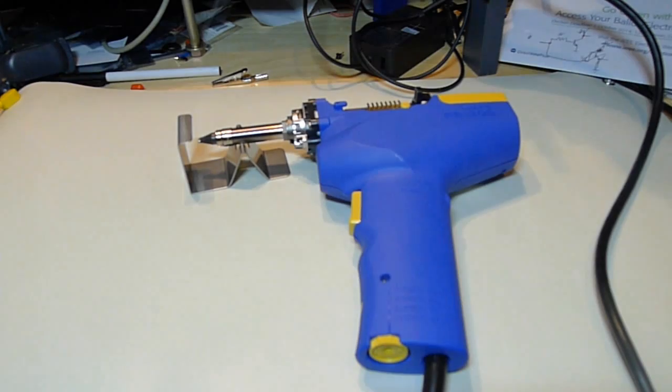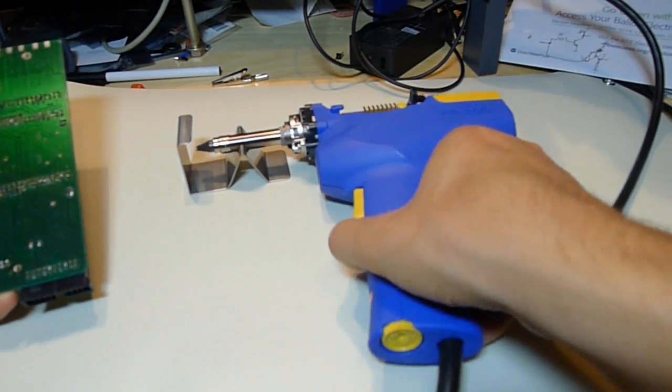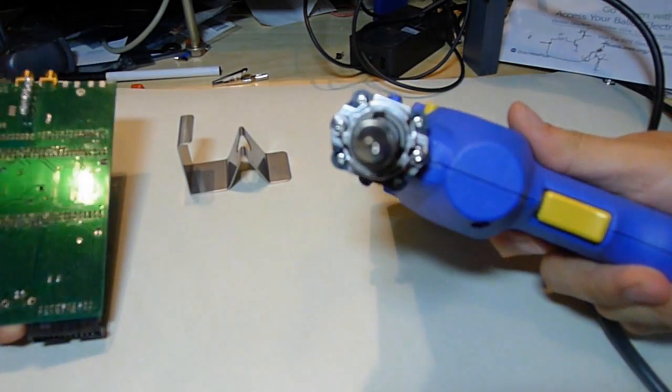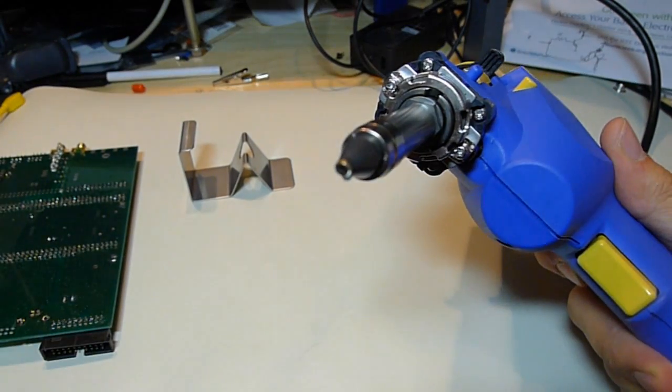So seeing it in action, if you haven't used one of these desoldering guns, basically it has a little heat on the tip. The tip itself has a hole in it.